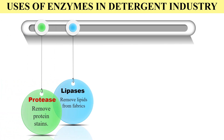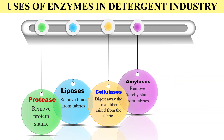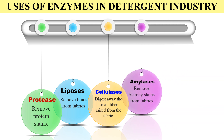The second example is lipases, which remove lipid stains from fabric. The next example is cellulases, which digest the small fibers that sometimes arise in fabric. Next are amylases, which are used to remove starchy stains from fabric because these enzymes digest the hydroglycosidic bonds of starch and hence remove the starchy stains.